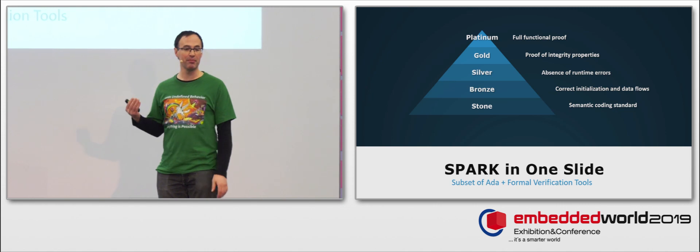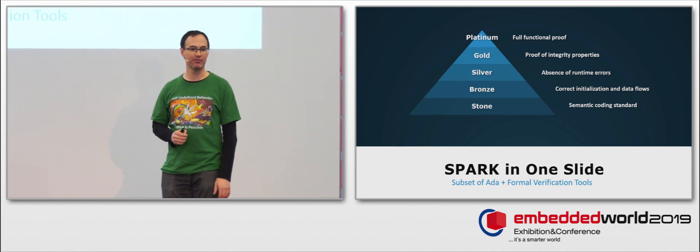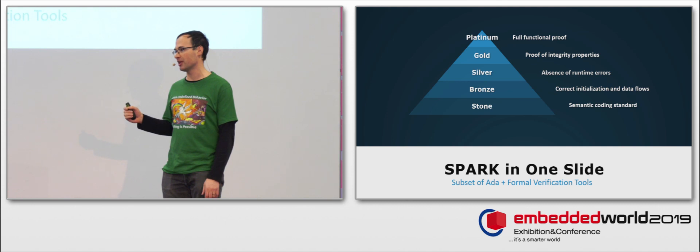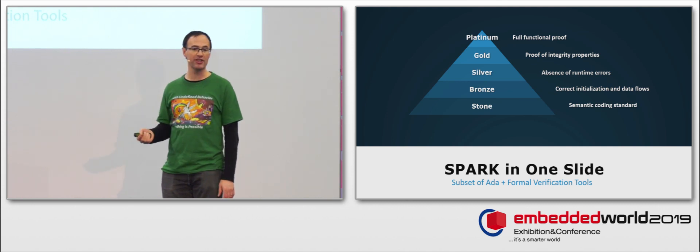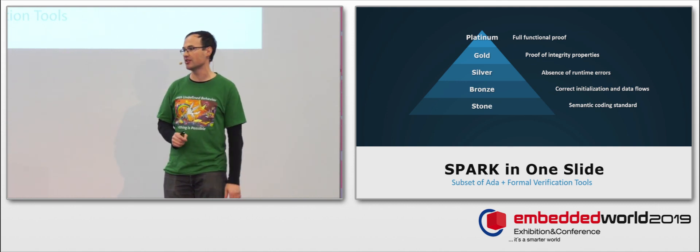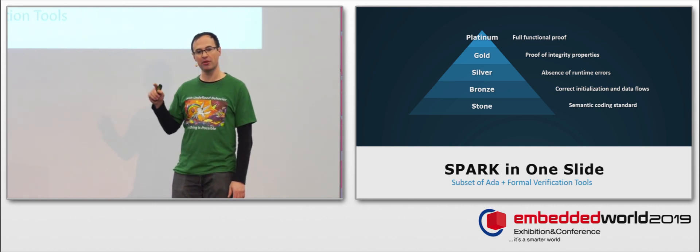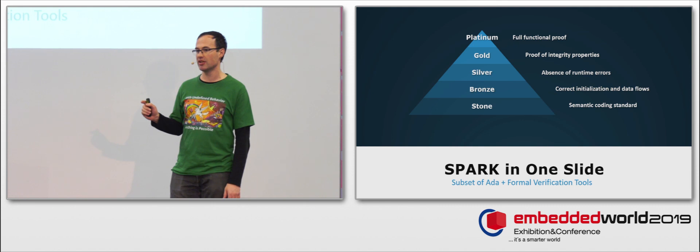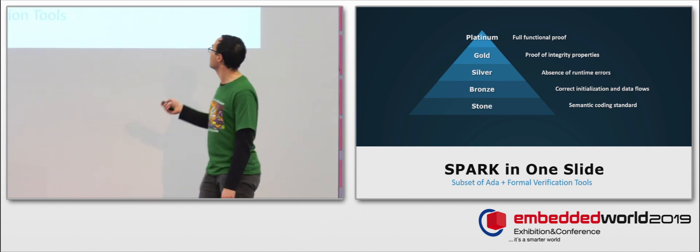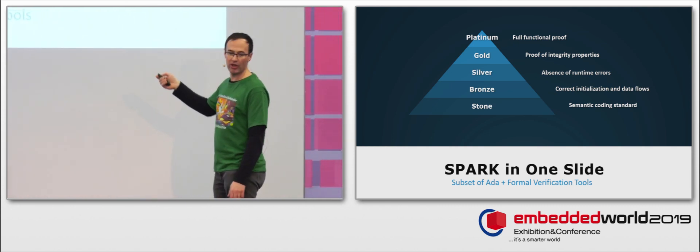Now, Spark makes the undecidable tractable. Spark Ada is a subset of the Ada programming language. And as such, it's already stronger than the 116 decidable rules of MISRA C. Then the Spark subset suitably restricts the Ada language to provide a strong semantic coding standard. That's what we call the stone level.